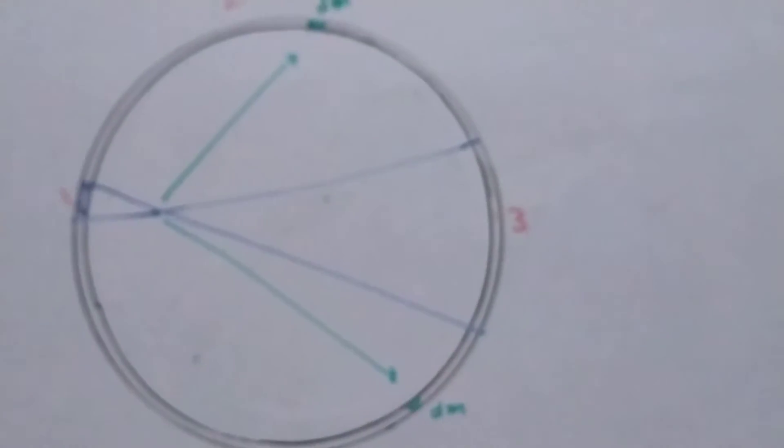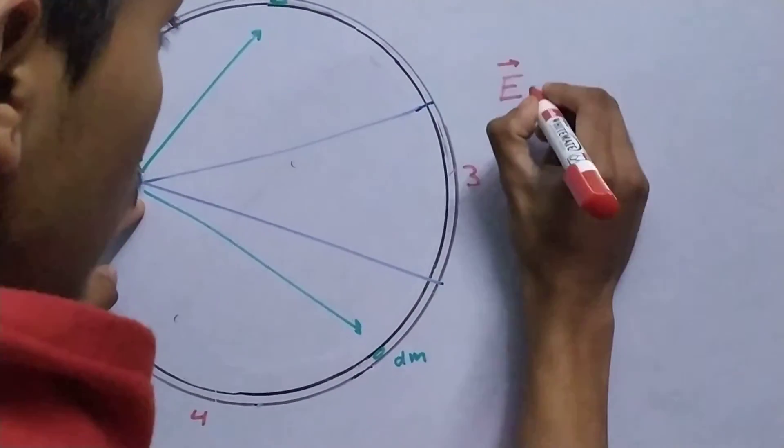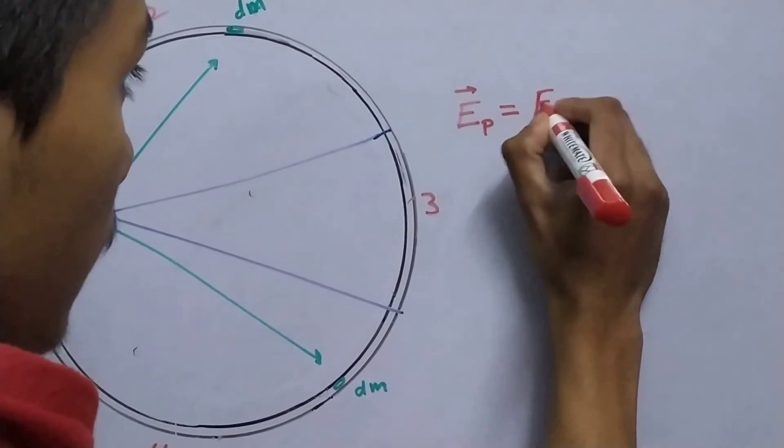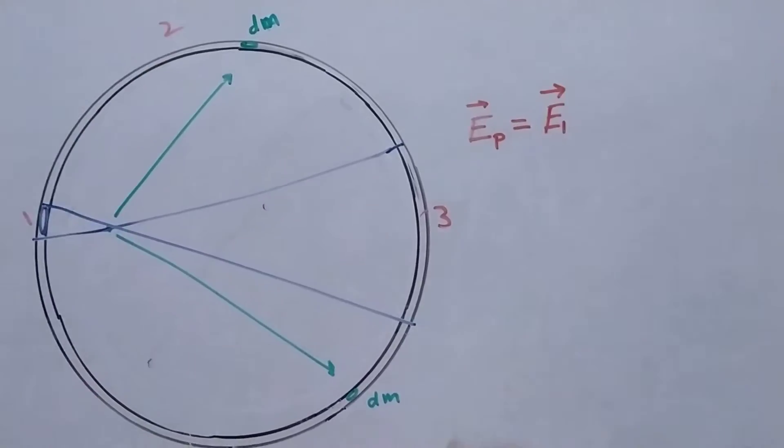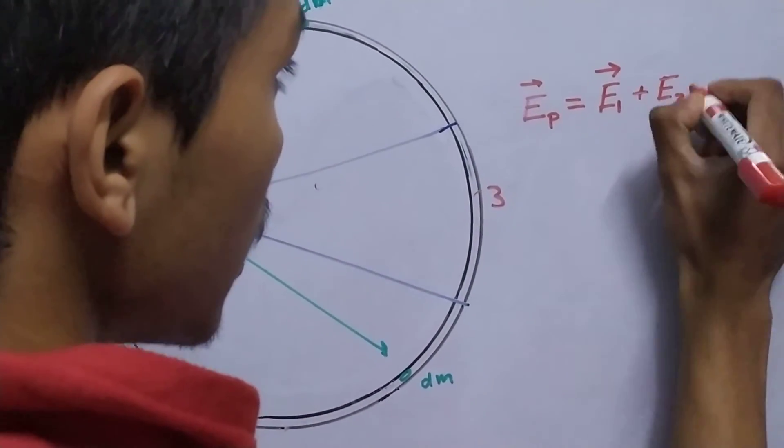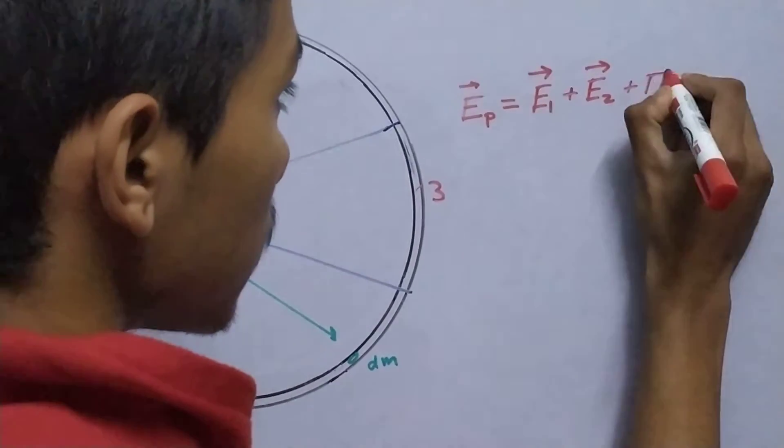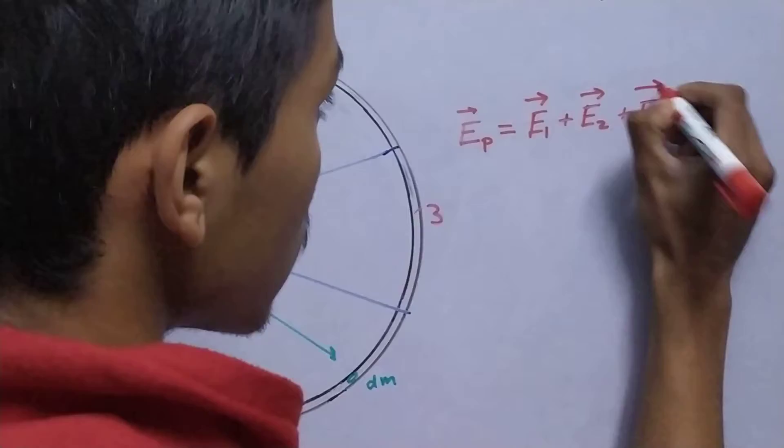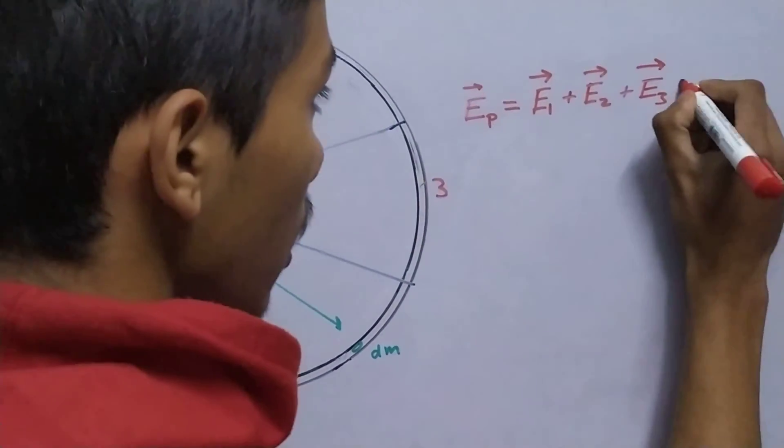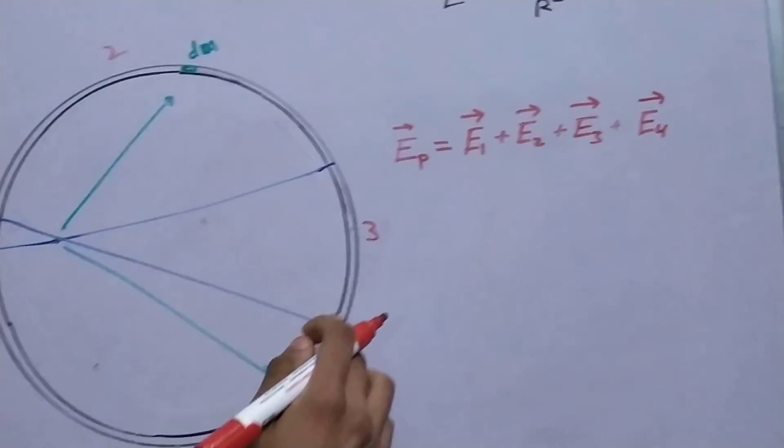The field at this point, let me call this point P is the field due to the first portion, plus the field due to second portion, this big arc, plus the field due to third portion, this big arc, plus the field due to the fourth portion.